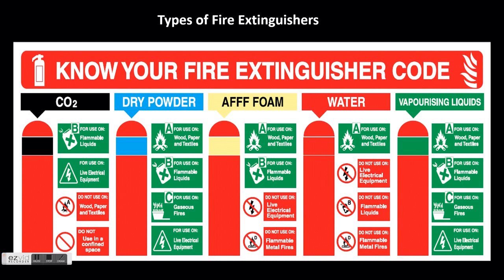Dry chemical powder extinguishers are rated for Class A, B, and C fires and are generally good for use in the roofing industry. Dry powder extinguishers are similar to dry chemical except they extinguish the fire by separating the fuel from the oxygen element or by removing the heat element of the fire triangle. Water and foam extinguishers extinguish fire by removing the heat element; foam agents also separate the oxygen element. Water extinguishers are for Class A fires only — they should not be used on Class B or C fires, as the discharge stream could spread flammable liquid or create a shock hazard.